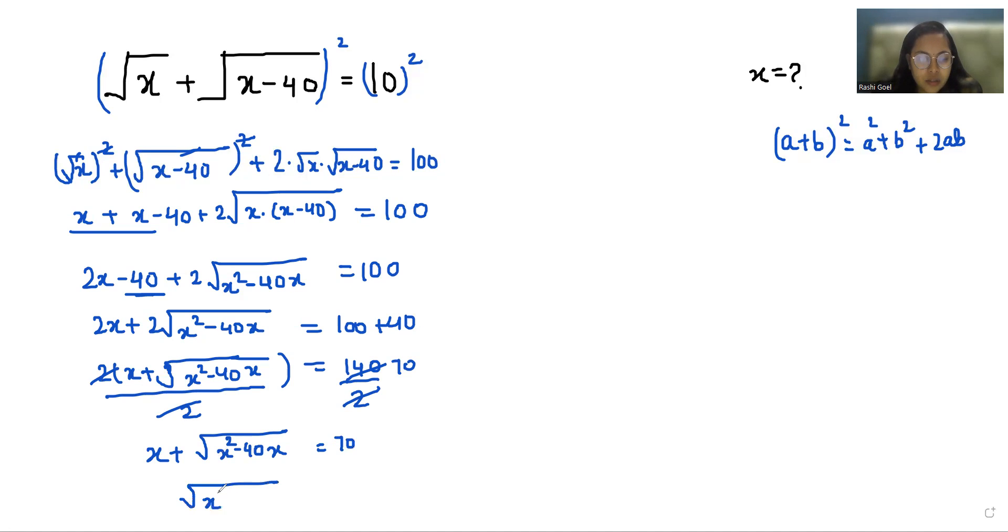So under root x square minus 40x equals 70 minus x. Now again I am doing squaring both sides. And with the help of this square, this square root eliminates. So only x square minus 40x is left equals, and on the right hand side we are going to use a very famous identity that is a minus b whole square: a square plus b square minus 2ab.